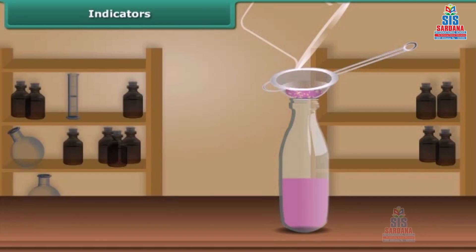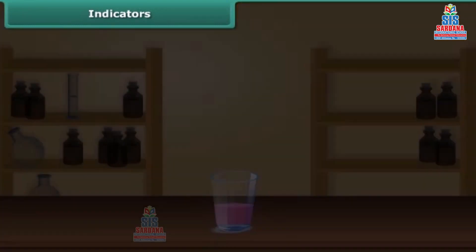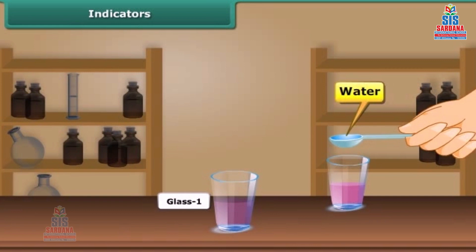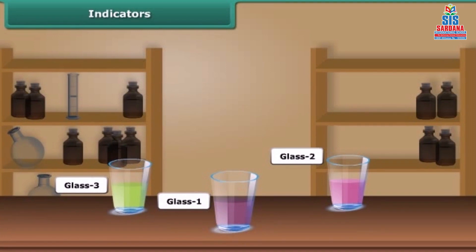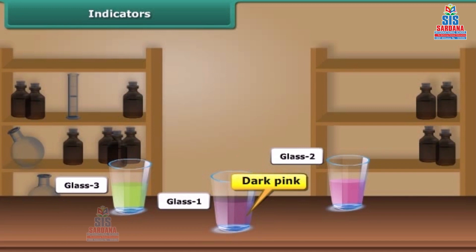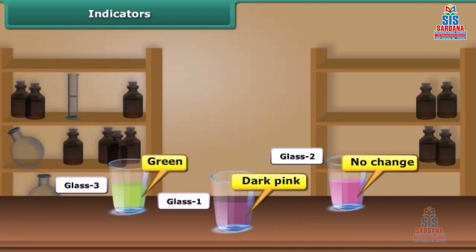This purple-red solution is your indicator. Take a small amount of this indicator in three small glasses. Pour lemon juice in the first glass, water in the second glass, and soap solution in the third glass. In glass one, the color changes to dark pink — lemon juice is acidic in nature, causing a color change in the indicator. There is no color change in glass two because water is neutral in nature. The color in the third glass changes to green.